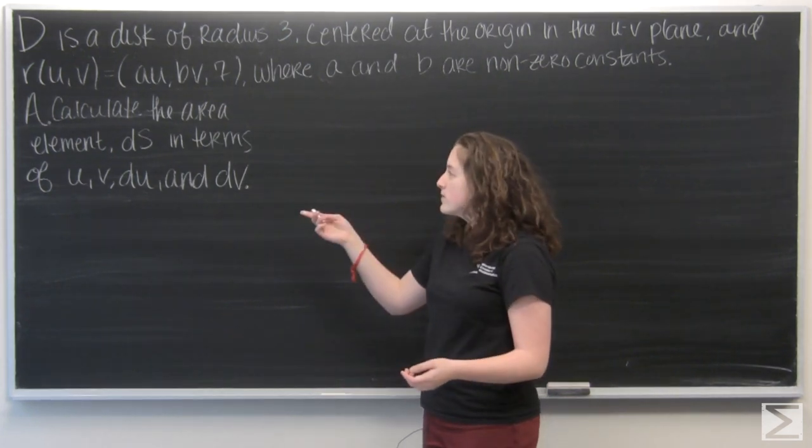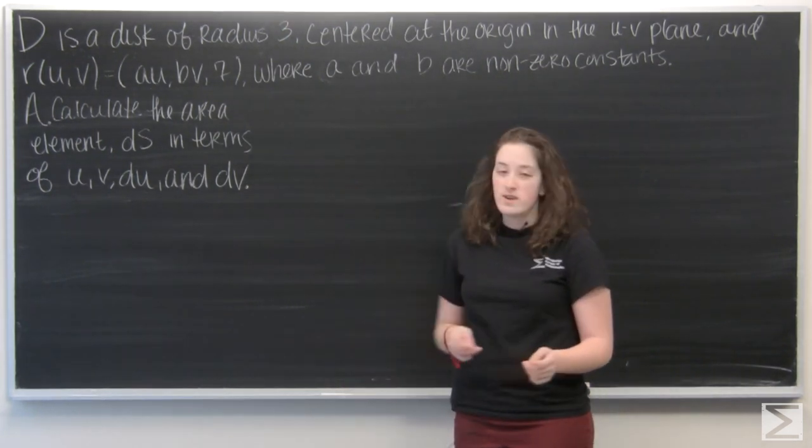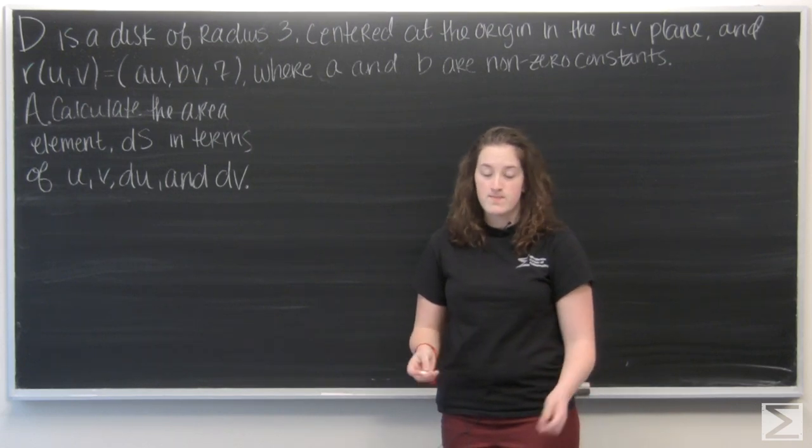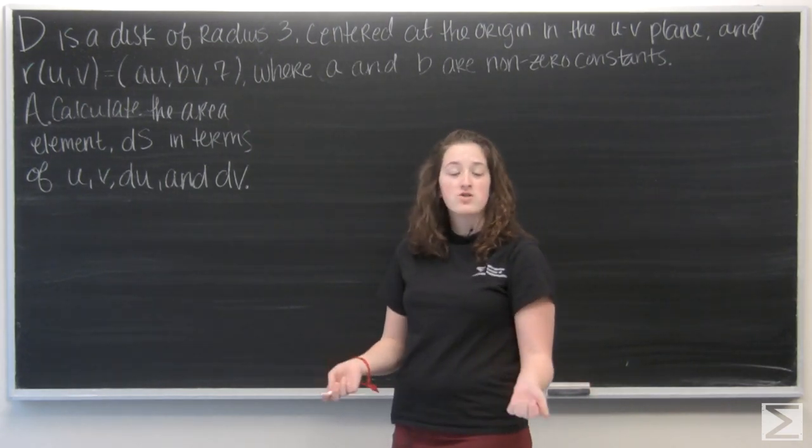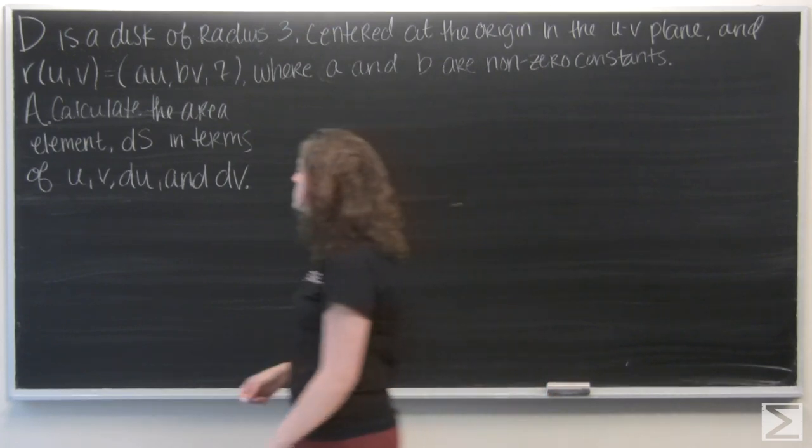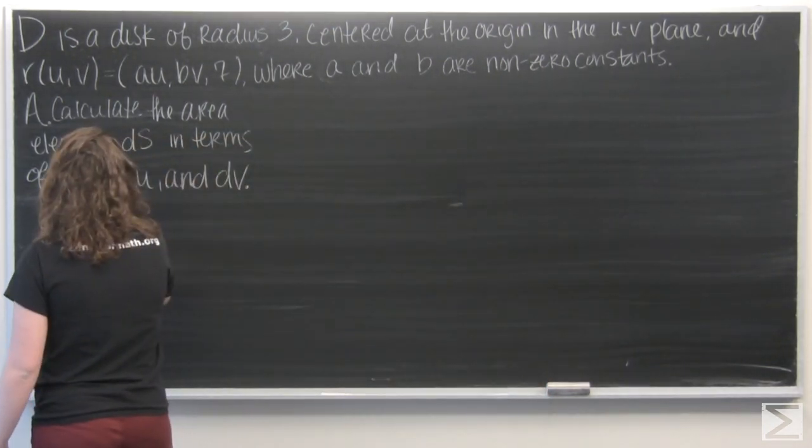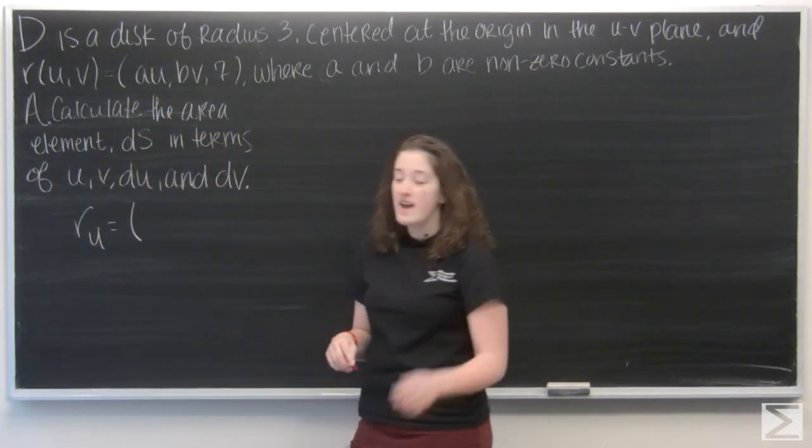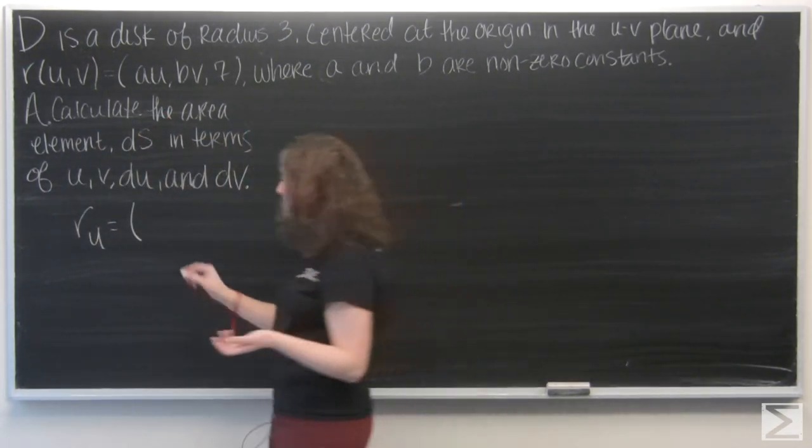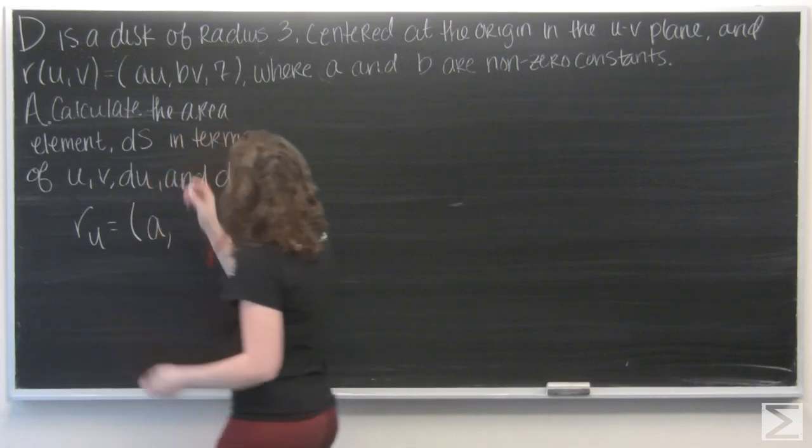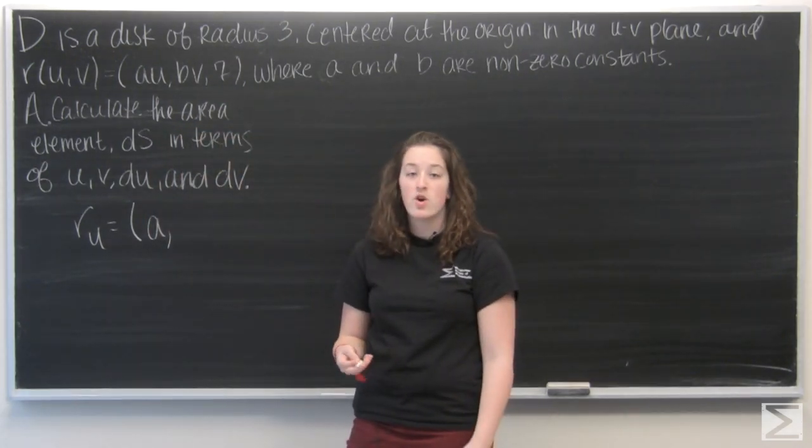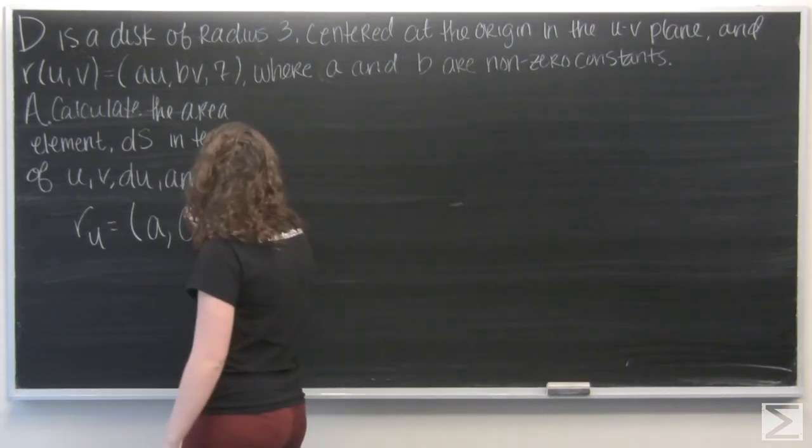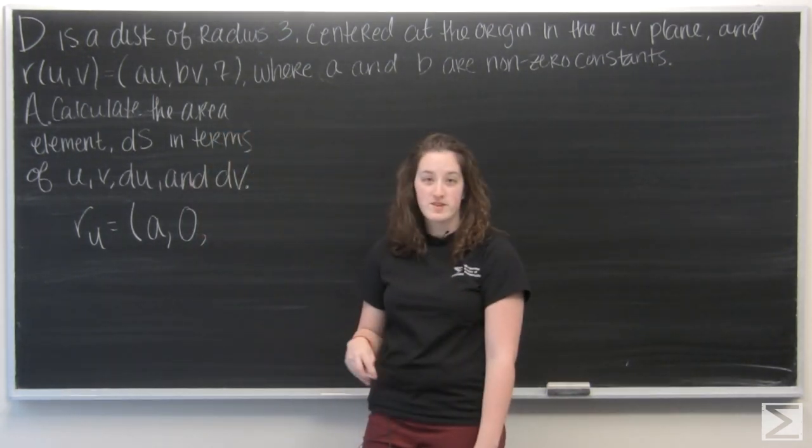Well, we can remember that to calculate the area element, we need to look at the partial derivatives of r with respect to u and v. So let's start by doing the partial derivative with respect to u. Well, au is just going to become a. Bv is going to be treated like a constant, so the partial derivative with respect to u is 0. And the same thing will happen for 7.